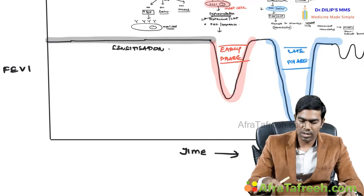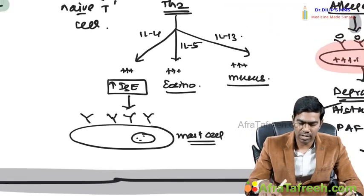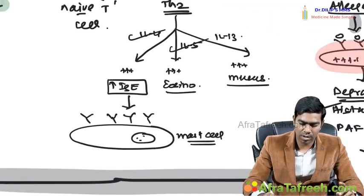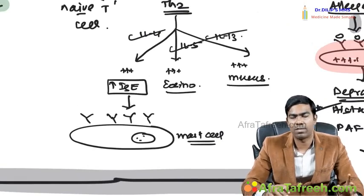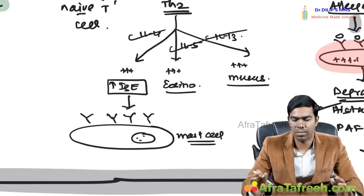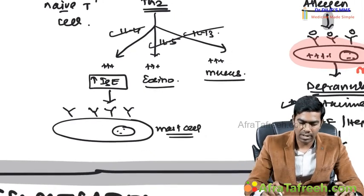This is the entire pathophysiology of bronchial asthma. Many areas will be targeted for treatment — interleukin-4, interleukin-5, interleukin-13 — which we will discuss in the next section.